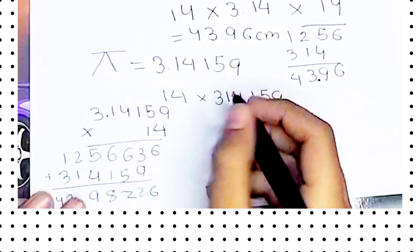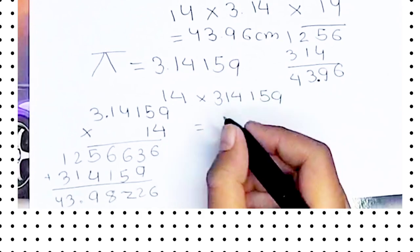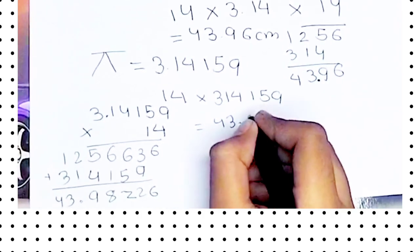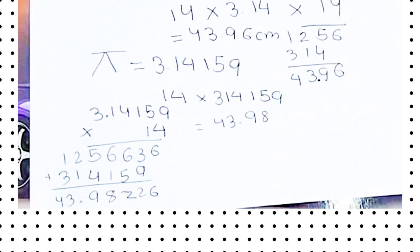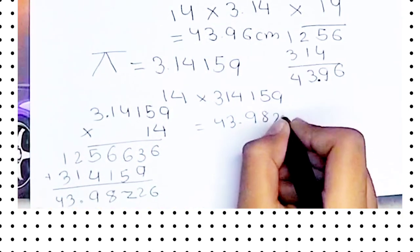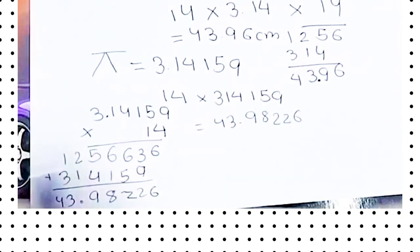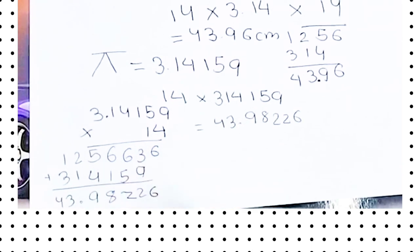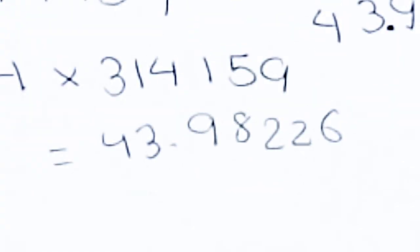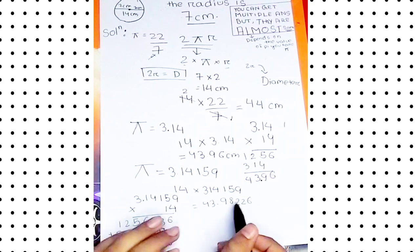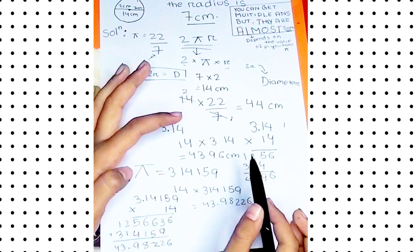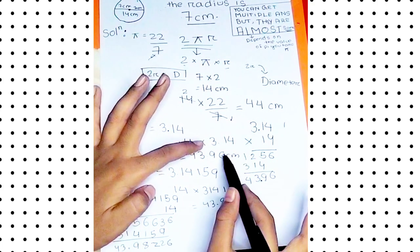We can see the product as 43.98226. Now see this, here you get a more accurate result. See how accurate we are getting the answers. First we got a rough answer, another rough answer here.